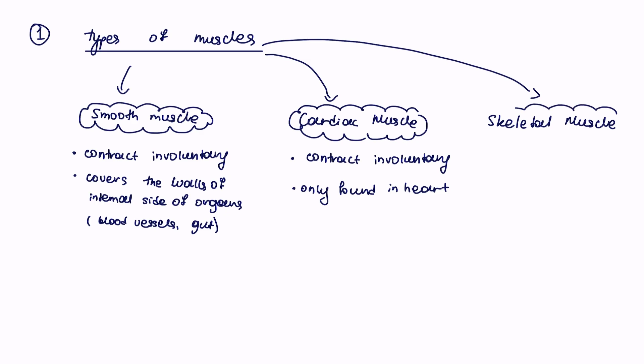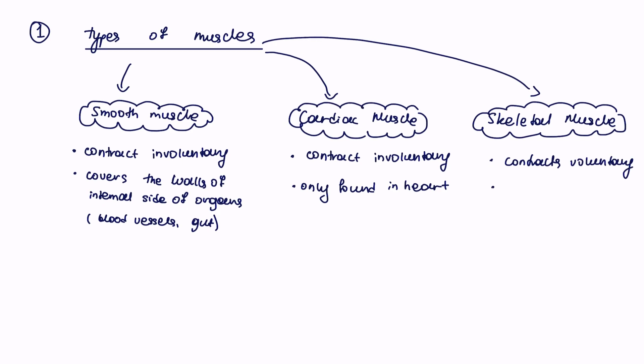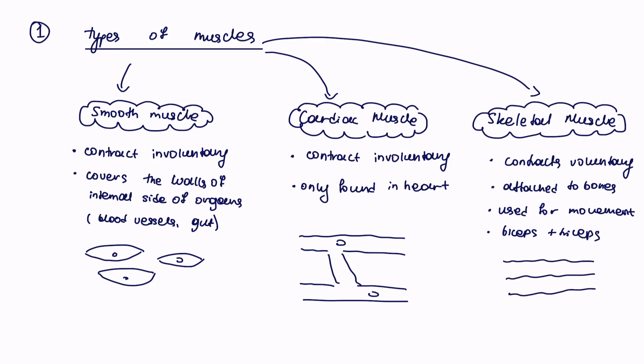The third and final type of muscle is skeletal muscle and this is the focus of the A-level. This muscle does contract voluntarily so we do need to think about that movement. For example if you want to raise your hand, that's the type of skeletal muscle that ensures that movement. This is where the muscles are attached to the bones, they're used for movement and examples are biceps and triceps. Sometimes you can be asked to draw the muscles or recognize them in a diagram. The smooth muscles look almost like little eyes, the cardiac muscles is two lines attached together, and the skeletal muscle is the striated muscle with many nuclei.